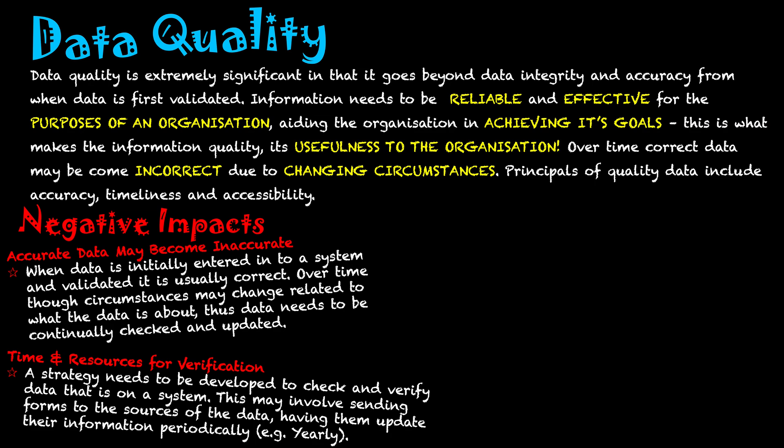The second negative impact is time and resources for verification. It is a process that takes time. A strategy needs to be developed to check and verify data that is on a system, which may involve sending forms to the sources of the data and having them update their information periodically. With a school information system this is done yearly, though some places might do it monthly. There have to be periods of rechecking that data is correct in order to maintain data quality.